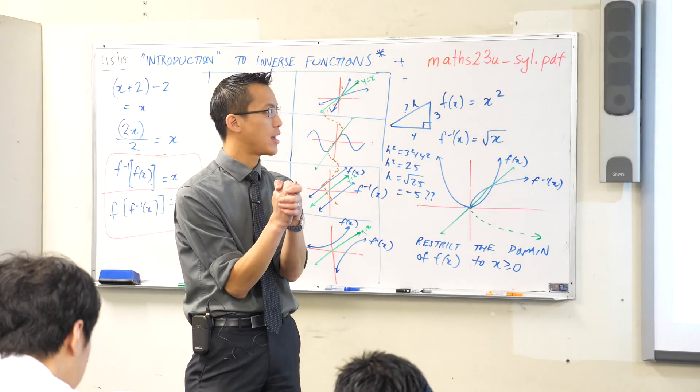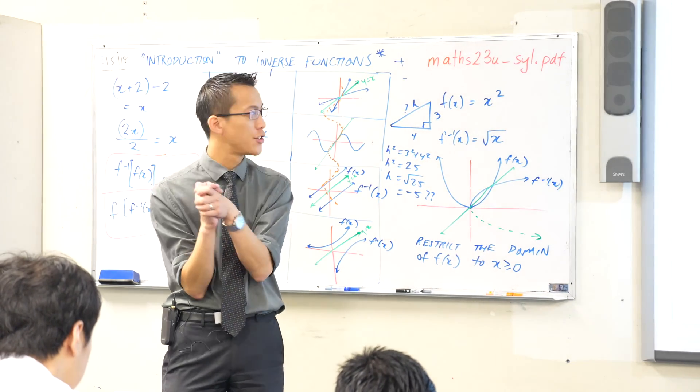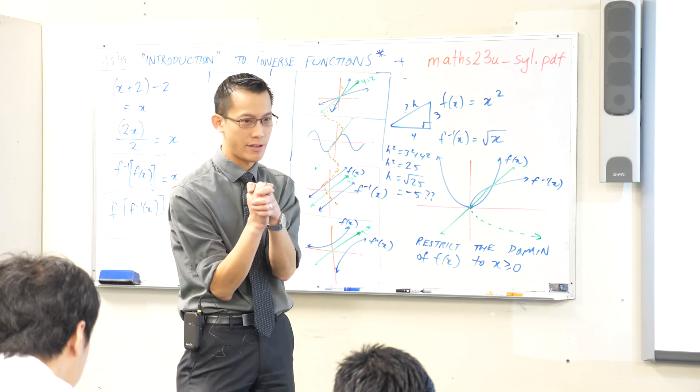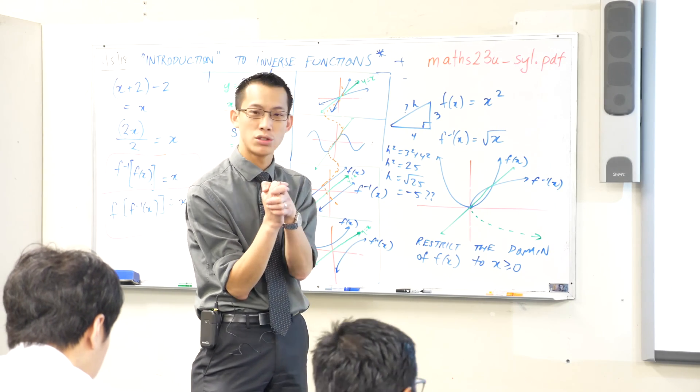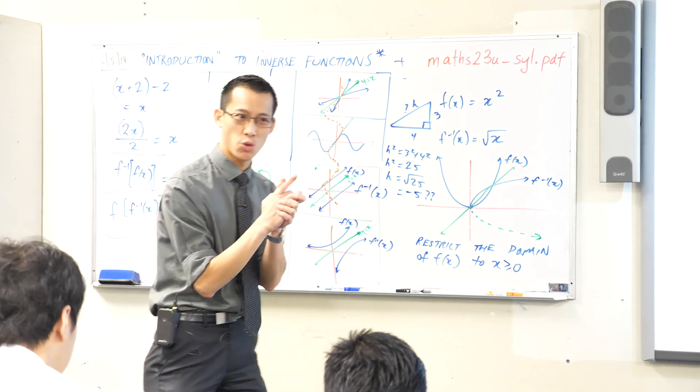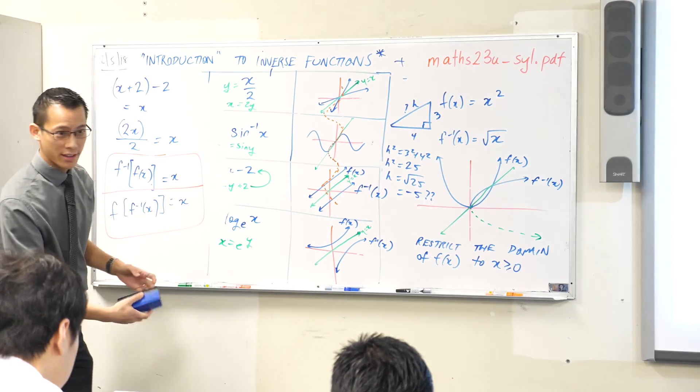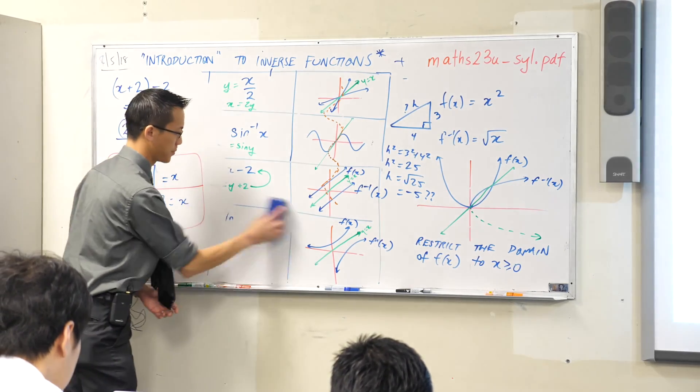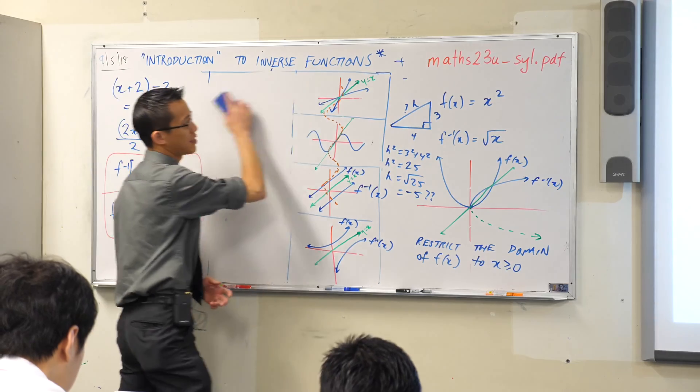The function f of x equals x plus 3 is defined over the domain 0 is less than or equal to x is less than or equal to 2. Can you draw this with me? Maybe you want to make a subheading where you're going to start your exercise. Let's just draw this and work it through together.